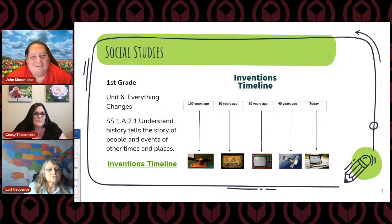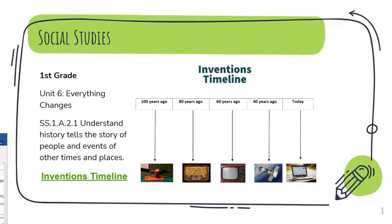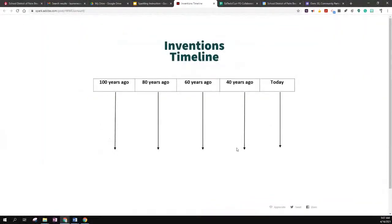Lori is going to show you now how you can use Spark with Social Studies. I created a timeline for Unit 6, 'Everything Changes,' studying communication inventions. I put together the years and then the pictures. Students can use the template and find the images through Adobe Spark so that they will have their individual communication timeline.